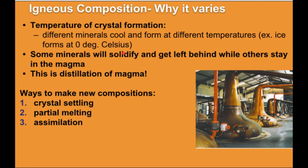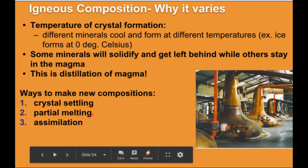Because of these differences in melting and crystallization temperatures, you'll get minerals separating from each other, separating out the different chemicals. Some minerals will crystallize and get left behind while others stay in the melt and continue to move toward the surface — this is what I call the distillation of magma. So three ways to make new compositions of magma are crystal settling, partial melting, and assimilation.